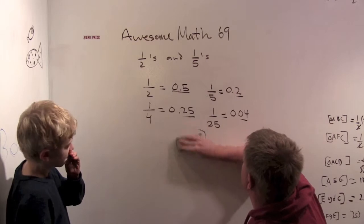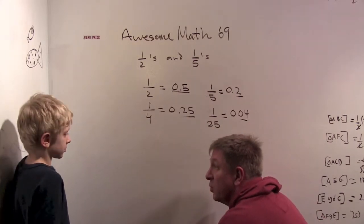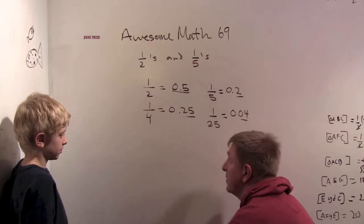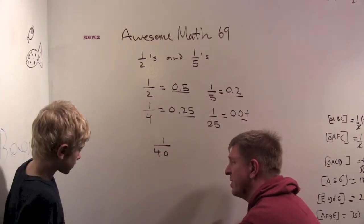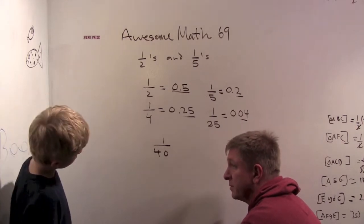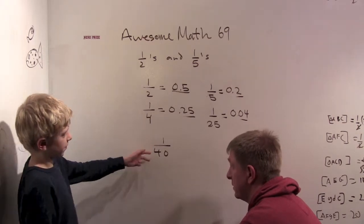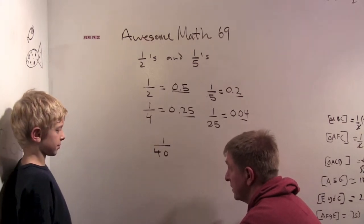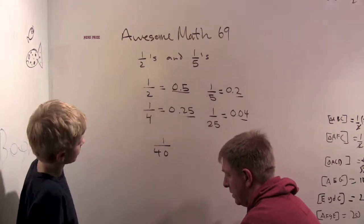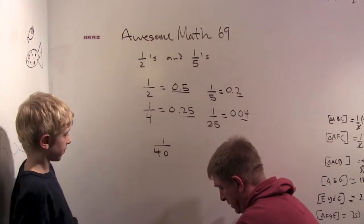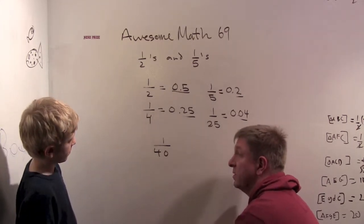So that leads to some interesting questions about things like one-fortieth, for example. How could we figure out what one-fortieth was as a decimal? Well, we need to get this to a power of five on the bottom. We need to multiply by some number to get us to a power of five on the bottom. So what would you like to do?